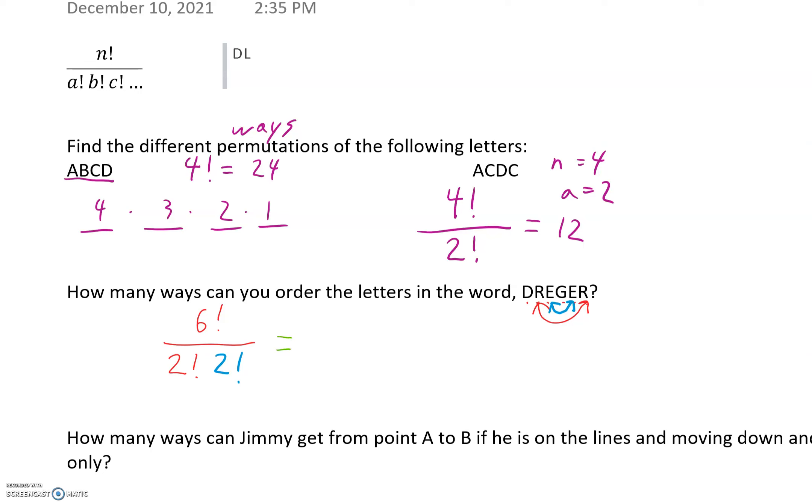And I'm gonna plug that into my calculator. So 6 factorial over 2 factorial times 2 factorial, so 180. I said 120, I meant 180. All right.